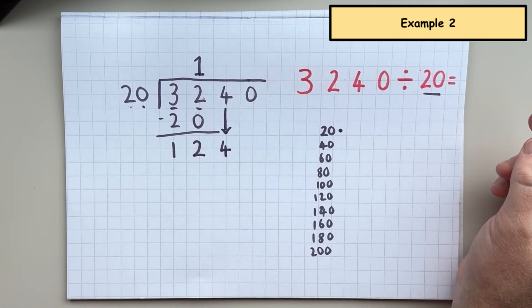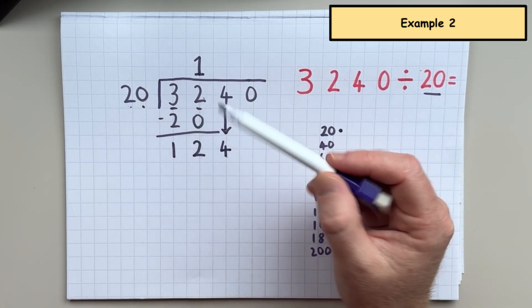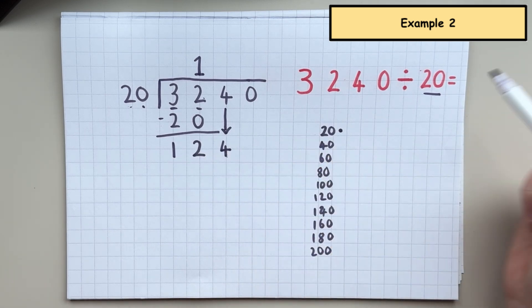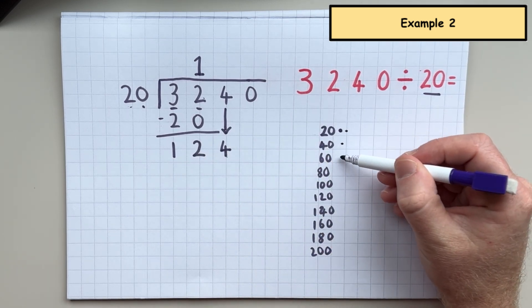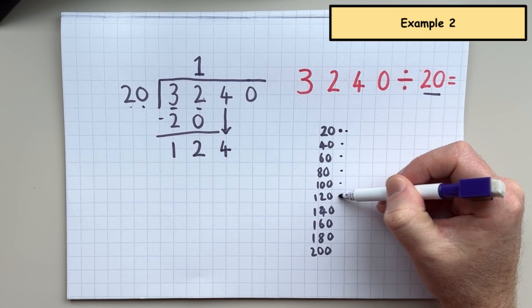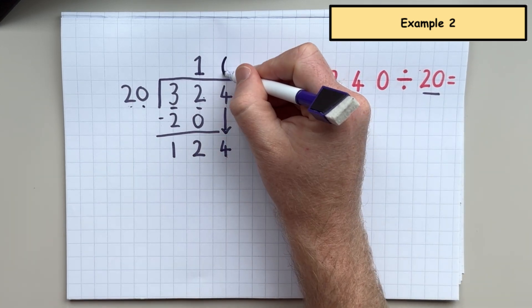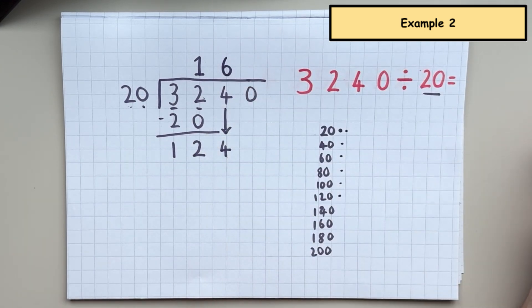So now I'm asking myself, how many 20s are there in 124? So there's one, two, three, four, five, six. Six 20s in 124.